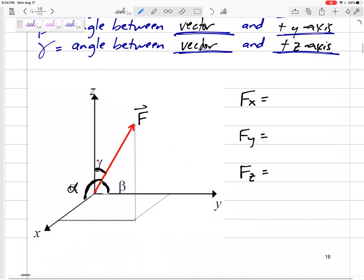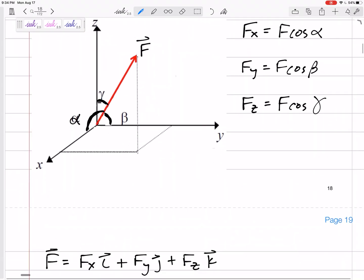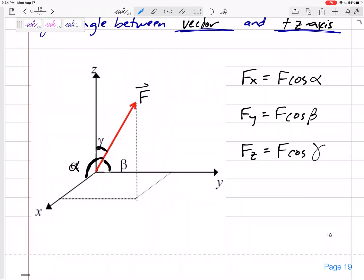So this one's easy. It's almost like a 2D problem. If you know the angle between them, then you can use adjacent, you can use cosine. So Fx would just be magnitude cosine alpha, Fy would be magnitude cosine beta, and Fz would be magnitude cosine gamma. Right, that's easy. You just use the cosines to find the components.